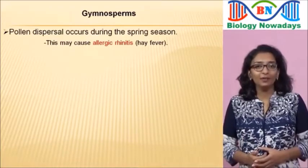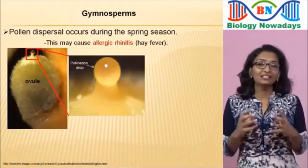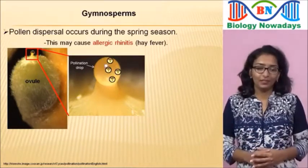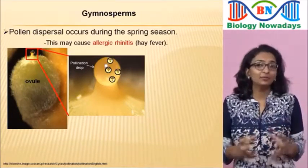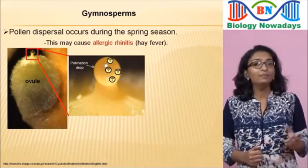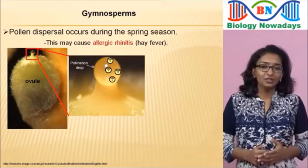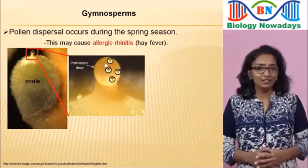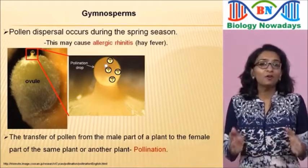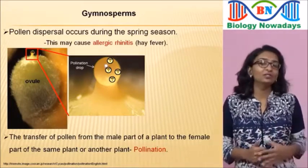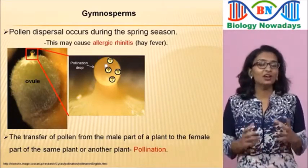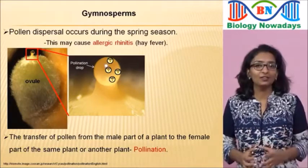The pollen grains carried away by wind will get trapped in a sticky drop called the pollination drop, seen at the micropyle. The pollination drop is secreted by the ovules. This transfer of pollen from the male part of a plant to the female part of the same or another plant is called pollination. In almost all gymnosperms, wind plays an important role in pollination — such pollination by wind is called anemophily.